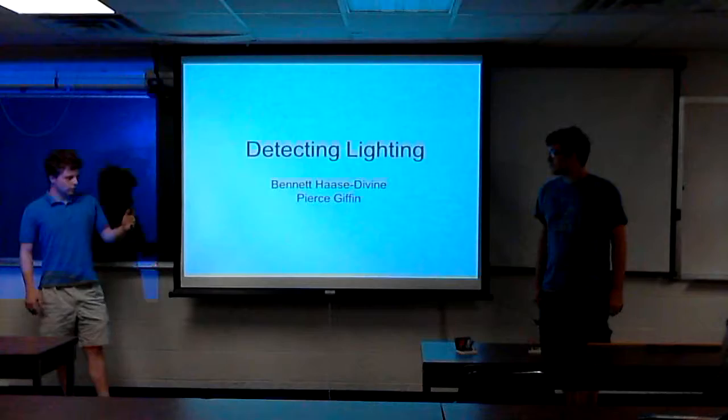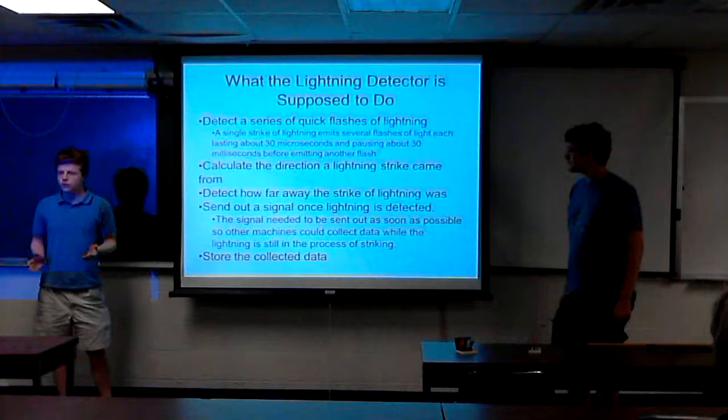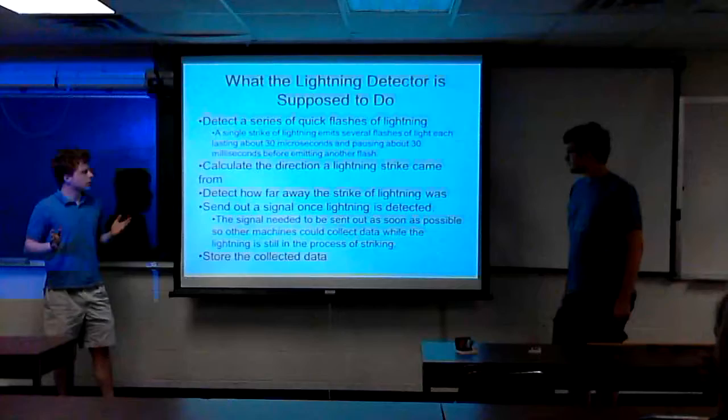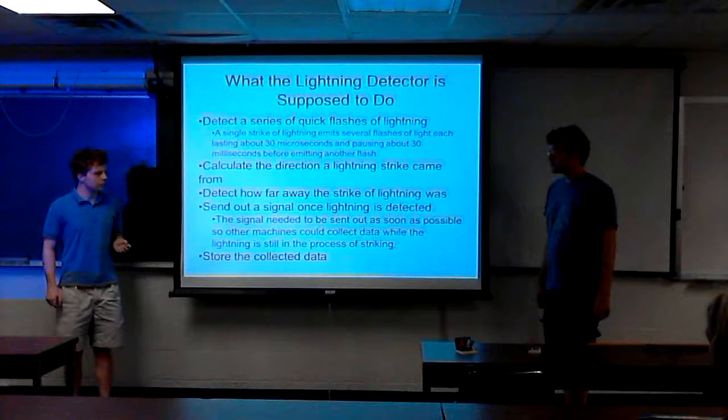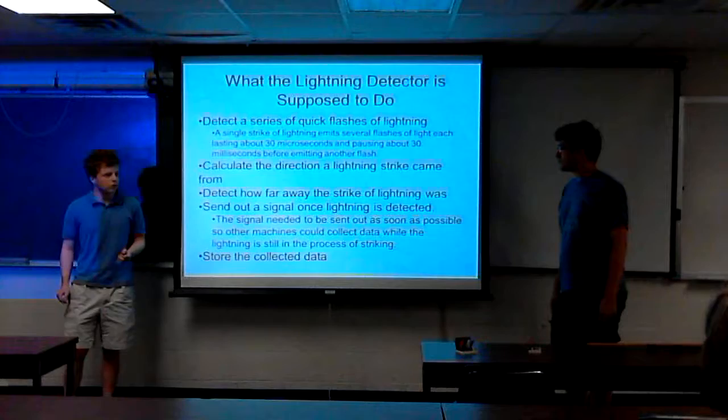Next slide. So these were the guidelines we were kind of set out to make our device. We were supposed to detect a series of quick flashes of lightning. A quick little 101 in lightning is when a lightning strikes there's actually several flashes. These flashes last about 30 microseconds and they're separated by about 30 milliseconds. So our task, we were supposed to be able to detect all these flashes or at least as many as we could.